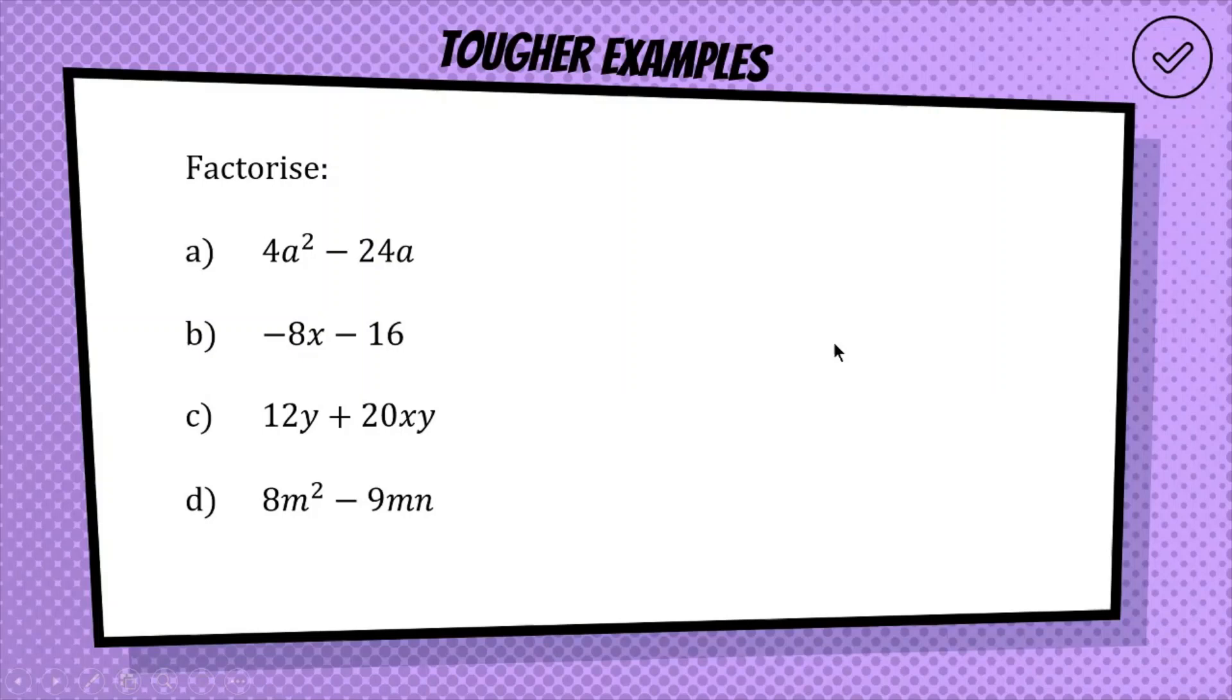All right, so in the first one, we've got 4a squared minus 24a. We're looking for a common multiplier. So we have a 4 here, and 24 is 6 times 4. So there's a common factor of 4 in both. And then also like the last one, we have an a squared here, and we have an a here. So we can factor out a 4, and we can also factor out an a. So out the front of our bracket, it's going to be a 4a.